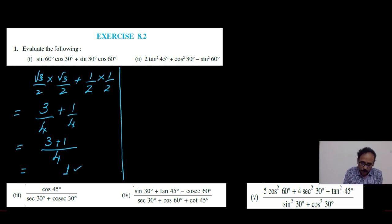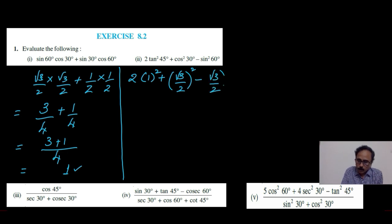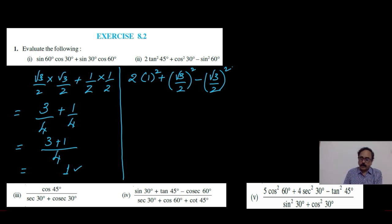Now let's do the second one. Here 2 times tan45 is 1, and as it is squared, tan square 45, we have to do 1 square. Then cos square 30: cos30 is root 3 by 2 and it is squared. Now sin60 is again root 3 by 2, whole square. We know that cos and sin are complementary to each other. The value of cos30 is always equal to the value of sin60. Therefore these two will be cancelled and the final answer is 2 times 1 which is equal to 2.